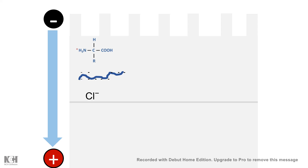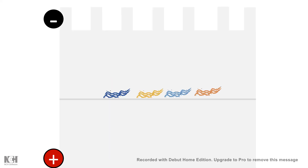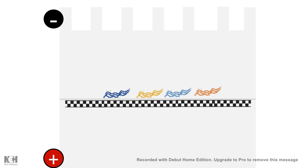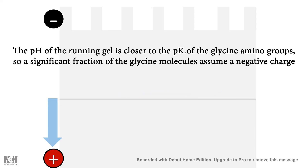As they move, the proteins become stacked on top of the resolving gel, as if making their positions at a starting line, from which they are resolved according to their molecular weight. The pH of the resolving gel is closer to the pKa of glycine, which is why glycine becomes negatively charged there and quickly moves through, just like the chloride ion. Now the protein is free to move at its own pace and is separated by its molecular weight.